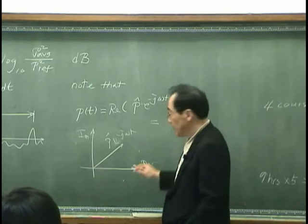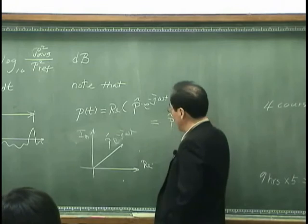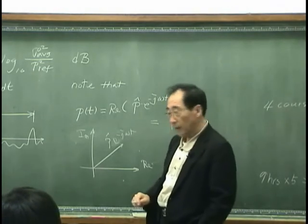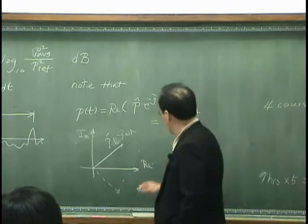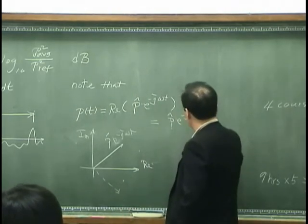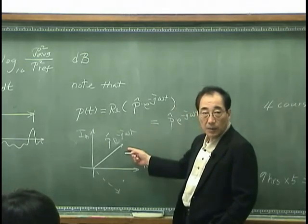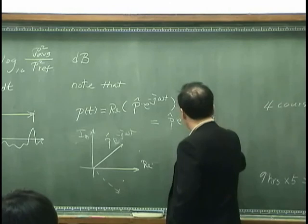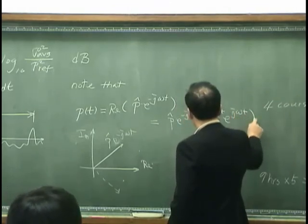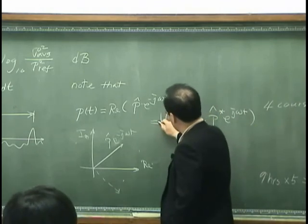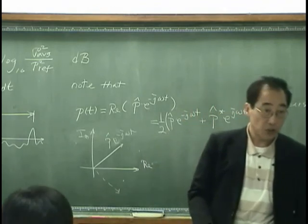then real part of this can be, P hat exponential minus j omega t plus this one. That is conjugate of this complex. So, that is P hat conjugate exponential j omega t, and then I have to divide by two. That is correct.